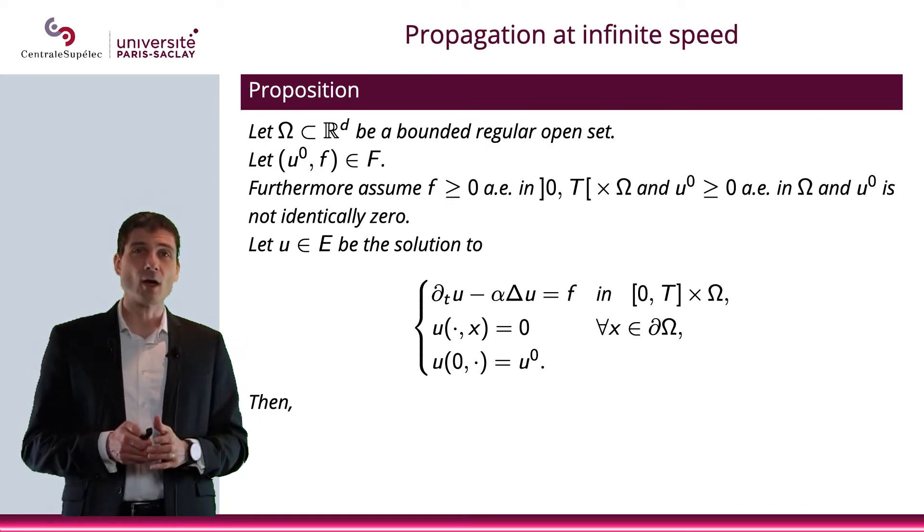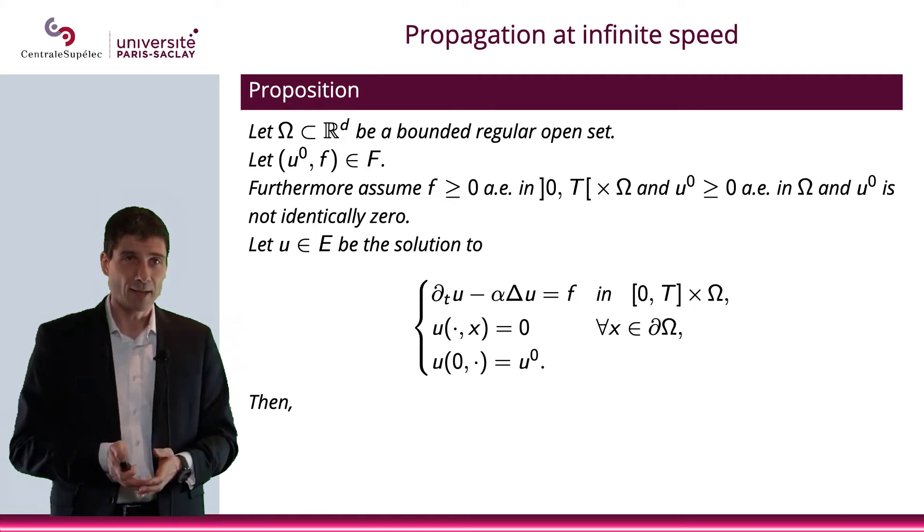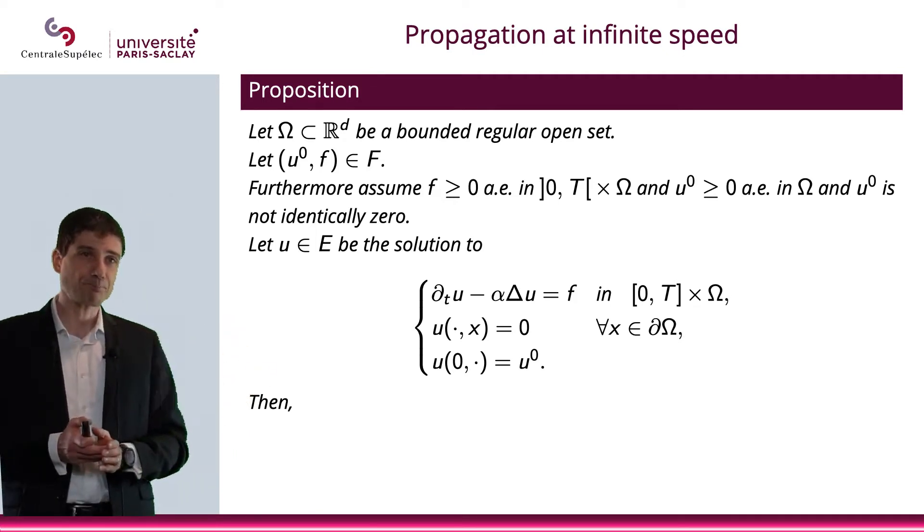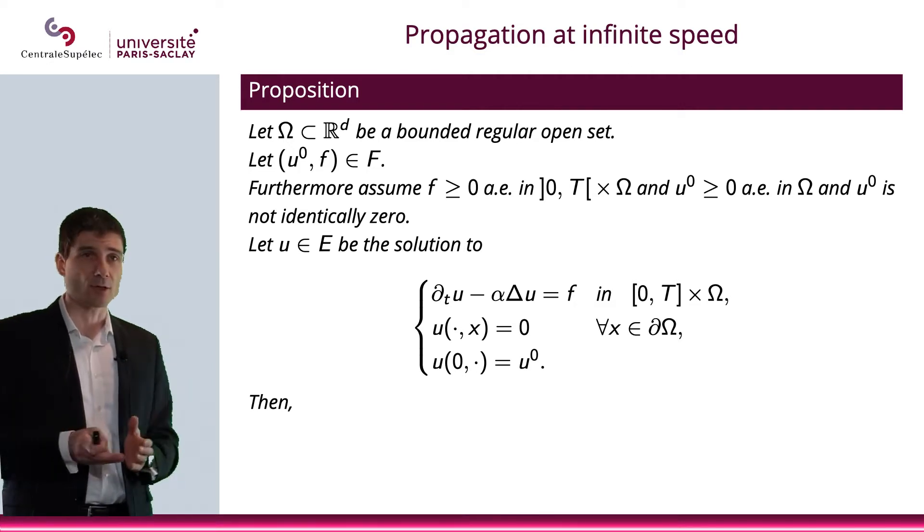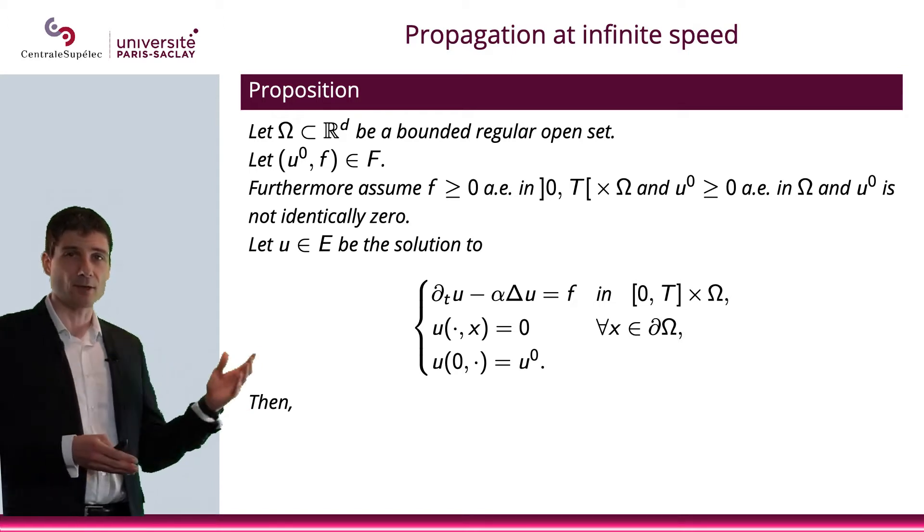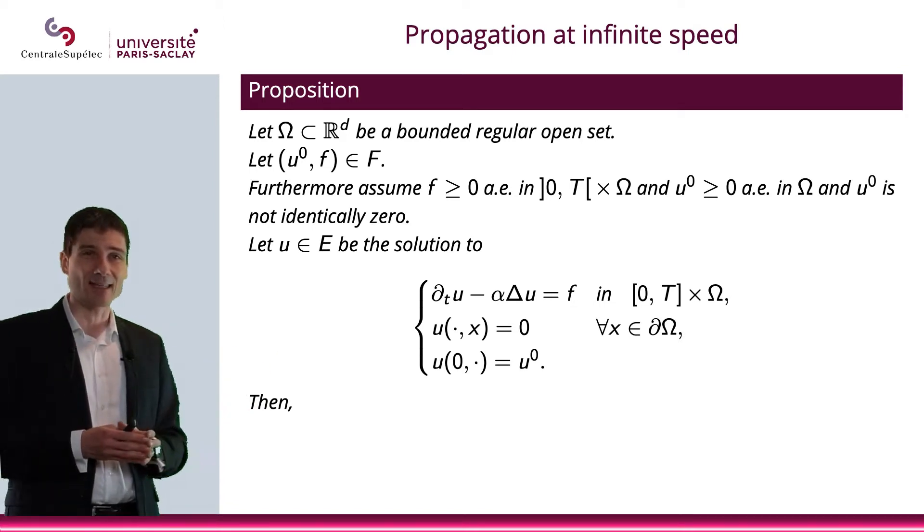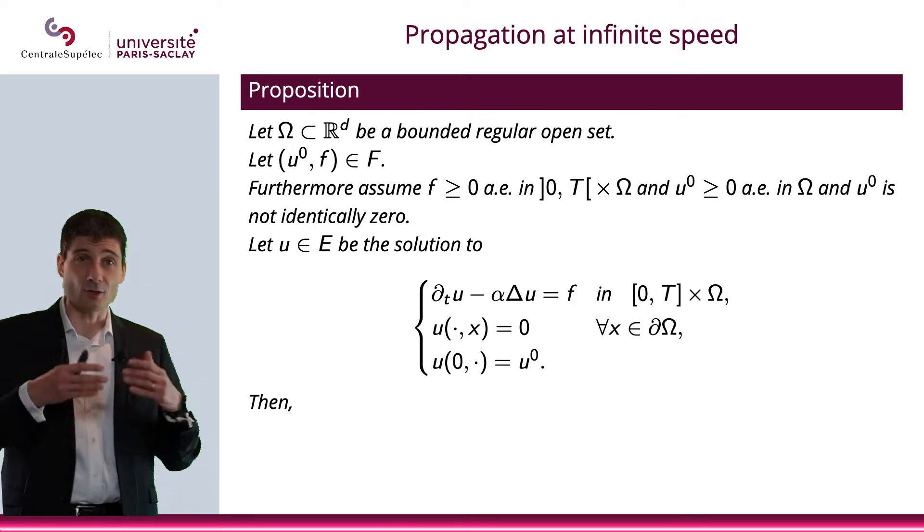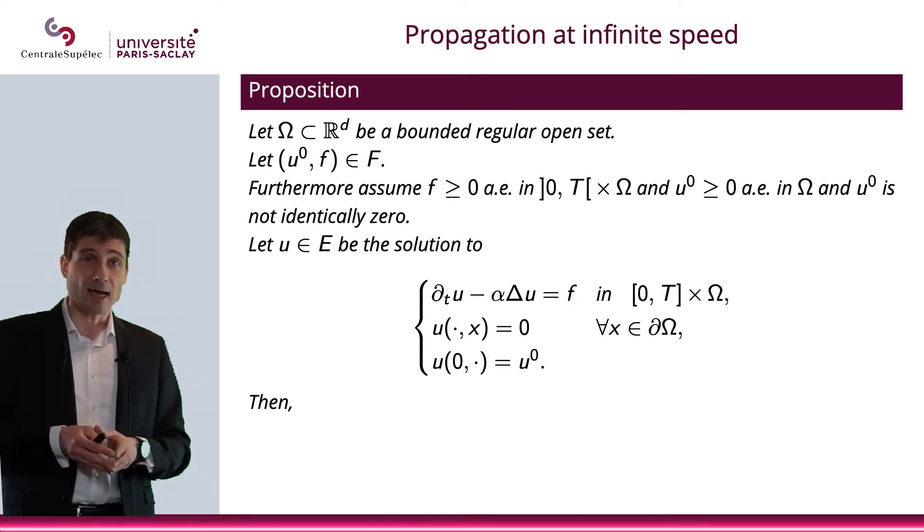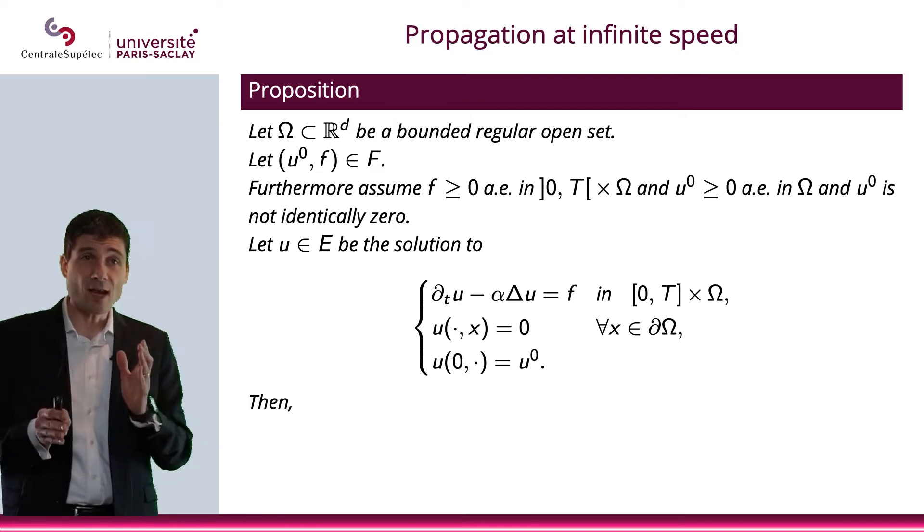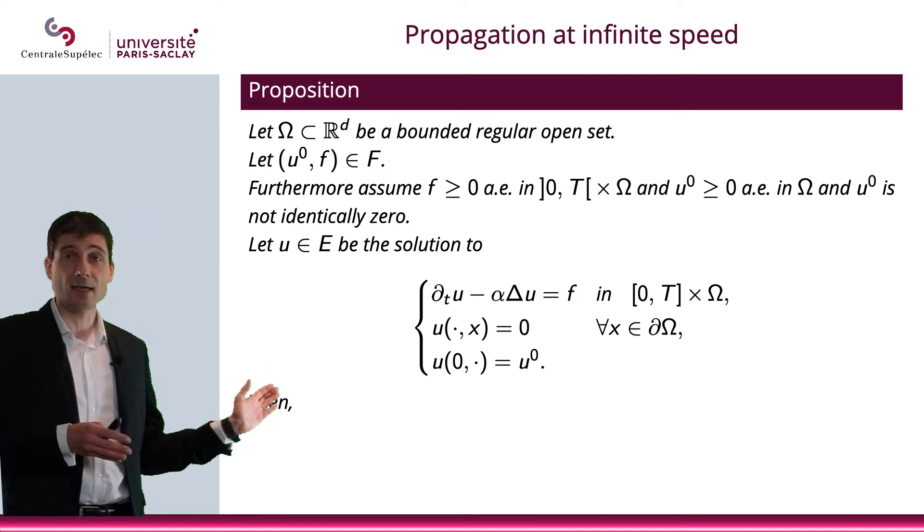As a matter of fact, let me give you an example where things don't go so well. And that is this proposition here. Again, we're going to consider Ω included in R^d, bounded regular open set. I'm going to consider an initial condition U^0, and a right-hand side F in that space F. I will also consider F to be non-negative, and U^0 to be non-negative, and also not identically equal to zero.